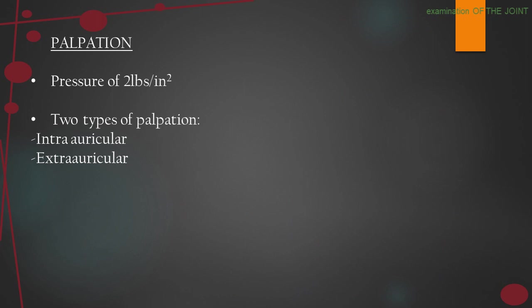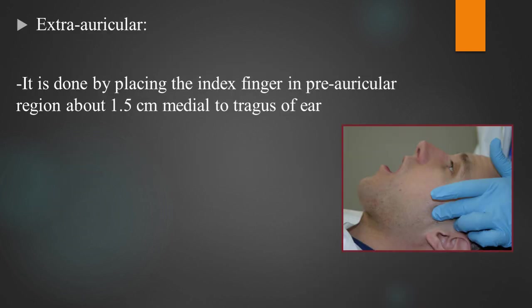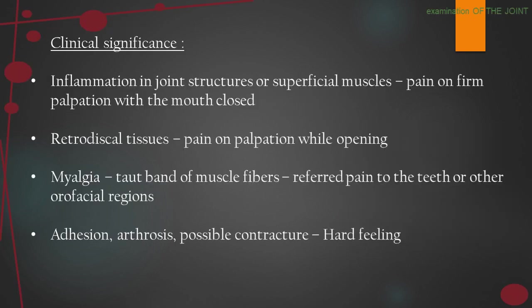On palpation of the TMJ, pressure applied is 2 lbs per square inch. Two types of palpation are noted: intra-auricular and extra-auricular. Intra-auricular palpation is done by placing the little finger inside the external auditory meatus — during mandibular movement, the posterior pole of the condylar head can be palpated. Extra-auricular palpation is done by placing the index finger in the pre-auricular region, about 1.5 cm medial to the tragus of the ear. Clinically: pain on firm palpation with mouth closed indicates inflammation of muscles; pain on palpation while opening indicates disc involvement of the retrodiscal tissues; a taut band of muscle fibers with referred pain to the teeth or other orofacial regions indicates myalgia; adhesion, arthrosis, and possible contracture gives a hard feeling on palpation.